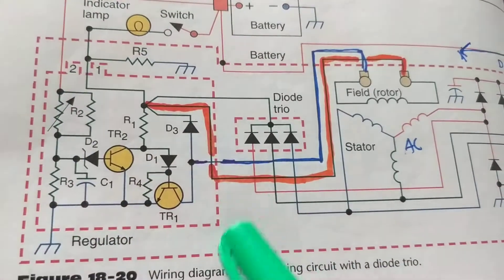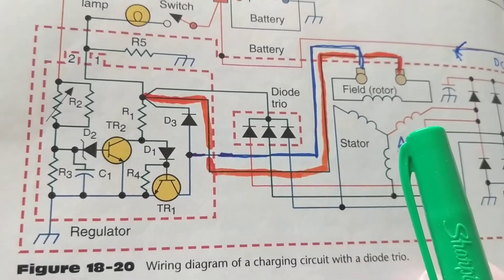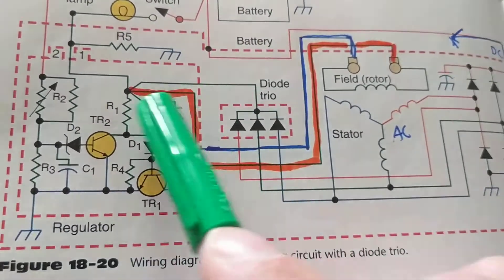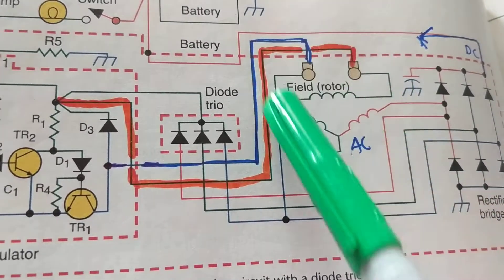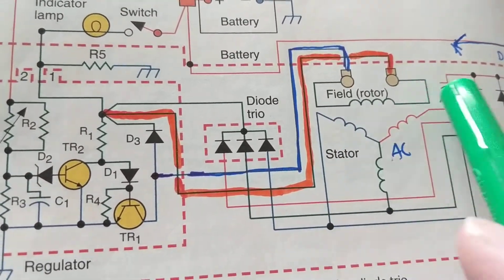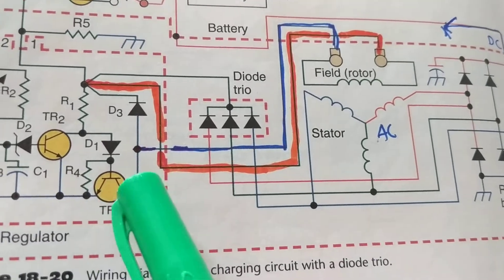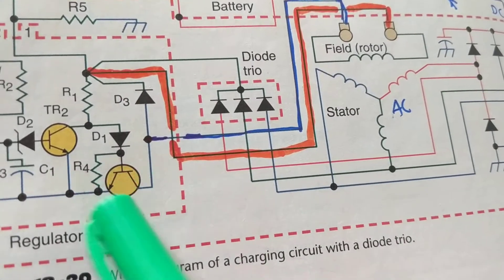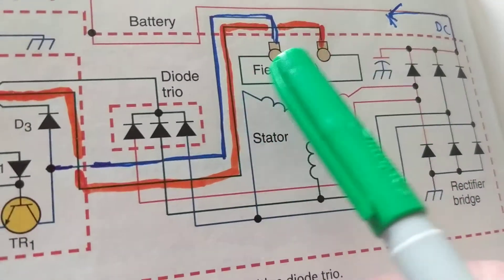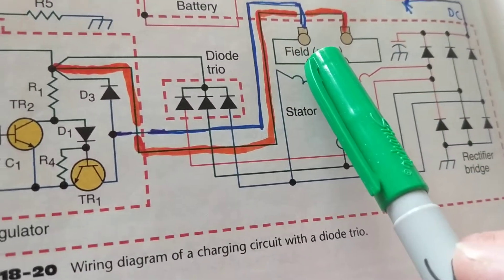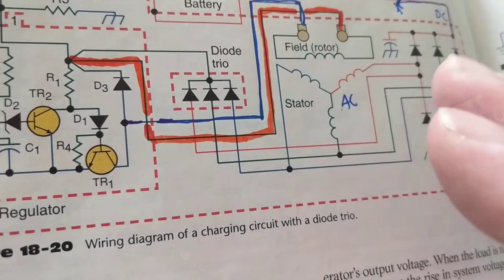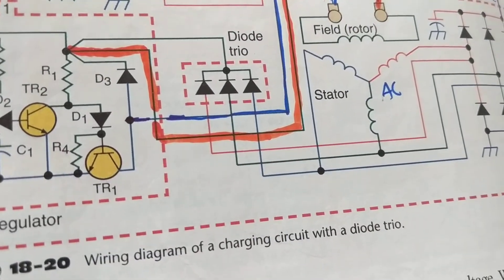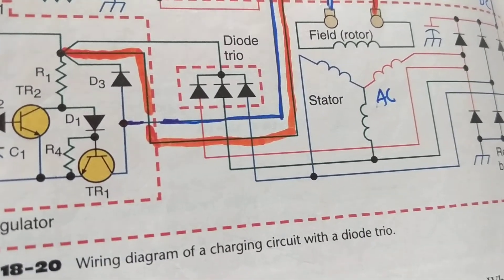Now times have changed — it's computerized. We take this regulator out, and in its place we put a computer module. That computer module controls the rotor winding. Instead of changing resistance like a transistor, it turns the field on and off at a set frequency. By doing that, the computer controls the current output.